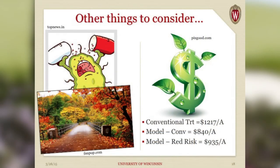On cost: we did a rough cost analysis. The conventional treatment came out to about $1,200 per acre. Using the model with two fewer applications came out to about $840 per acre. The reduced risk program was more expensive than the conventional program using the model, but not more expensive than the conventional program without the model. So in this one year of data, there is potential cost savings over a treatment that doesn't use the model.